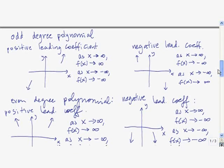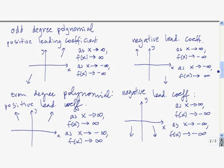Here are the general observations. For an odd degree polynomial, the end behavior is always going to be in opposite directions. Which of the two cases it is depends on whether the leading coefficient is positive or negative. For a positive leading coefficient, the function goes down on the left and up on the right. For a negative leading coefficient, it goes up on the left and down on the right. For an even degree polynomial, the end behavior is always the same in both directions. If the leading coefficient is positive, the function values go up in both directions. If it's negative, the function values go down in both directions.